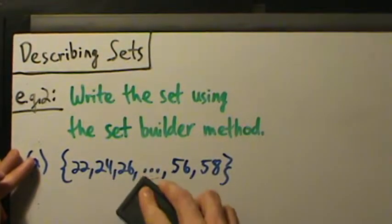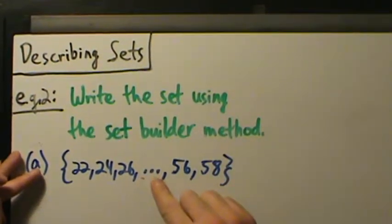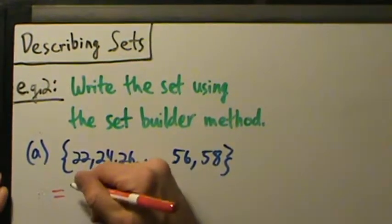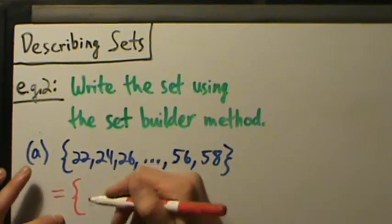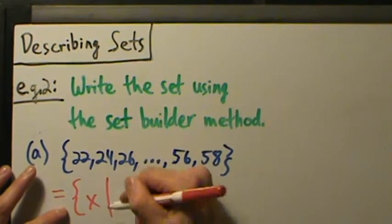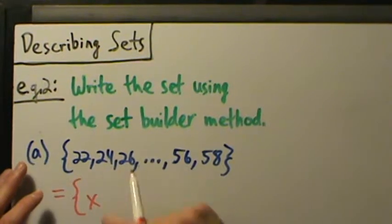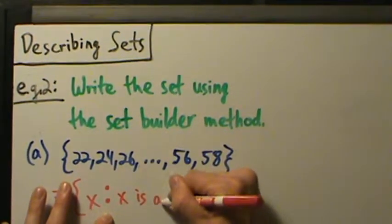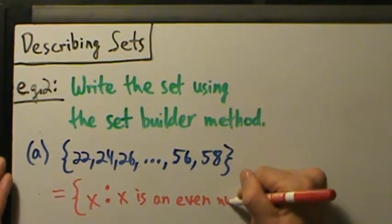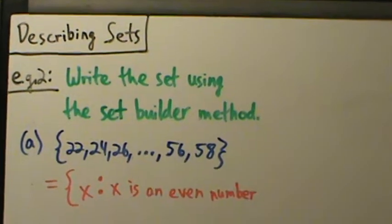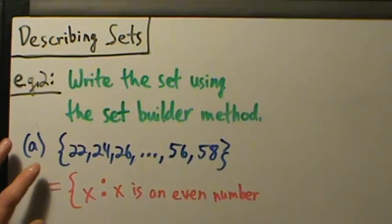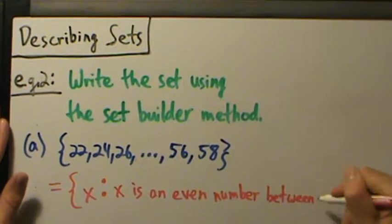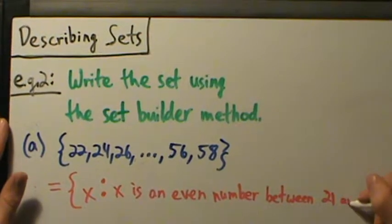So how do we express that using set builder notation? For set builder, we start with an open curly brace, then a variable name — typical to use x. Then a vertical bar or colon, meaning 'such that.' So: x such that x is an even number between 21 and 59.